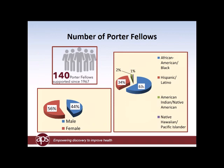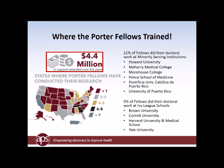The Porter Program has now supported over 140 fellows since 1967. 56% of them have been female. Of the Porter Fellows, 63% have been African American, 34% Hispanic, and 2% and 1% respectively American Indian and Pacific Islander. When I looked at these numbers, I was also interested in how much we had spent on the program — we've now spent well over $4.4 million. 20% of our fellows have done their doctoral work at minority institutions, and 5% at Ivy League schools. The distribution of Porter Fellowship research spans most of the United States.